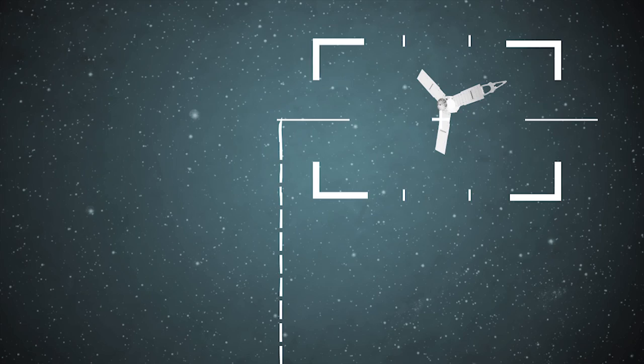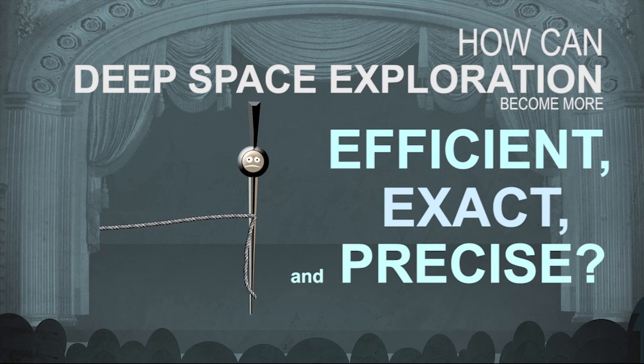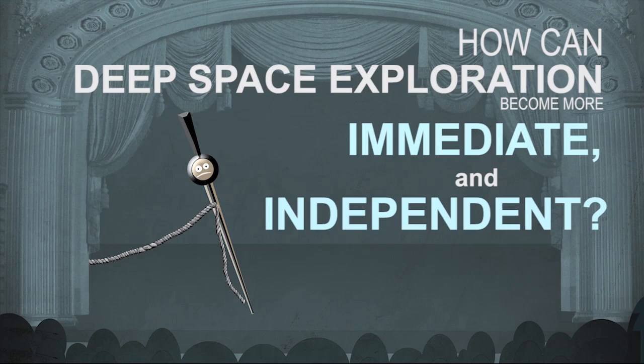So, how can deep space exploration become even more efficient, exact and precise? How can a spacecraft's navigation, as it travels further and further into space, be more immediate and independent of having to check in with... What's that Sammy? Of course! The Deep Space Atomic Clock.